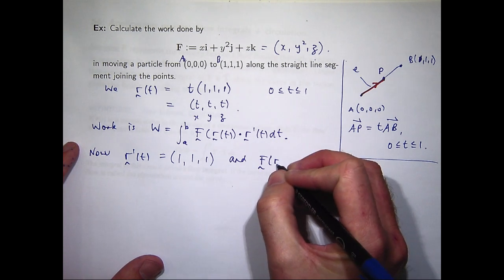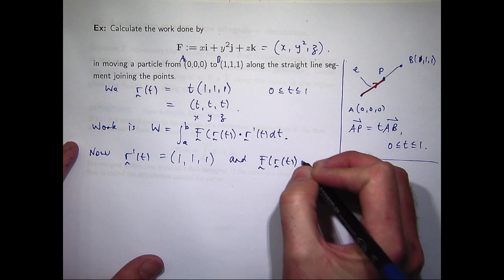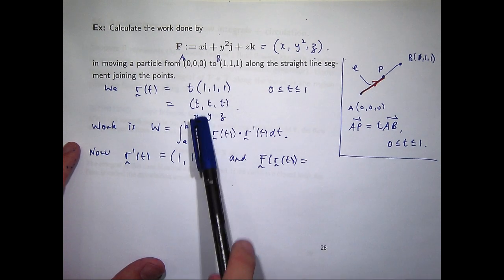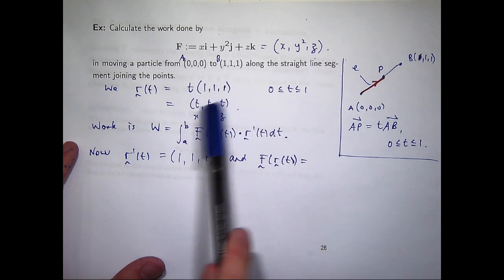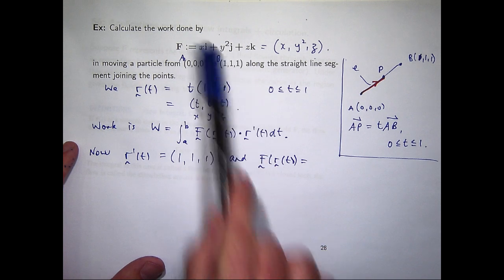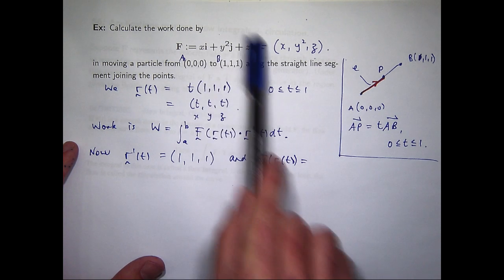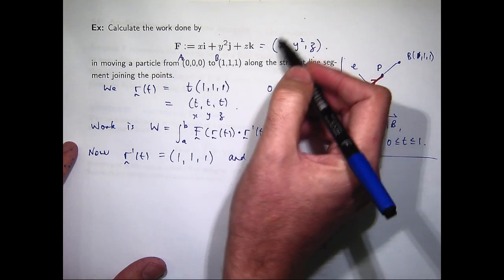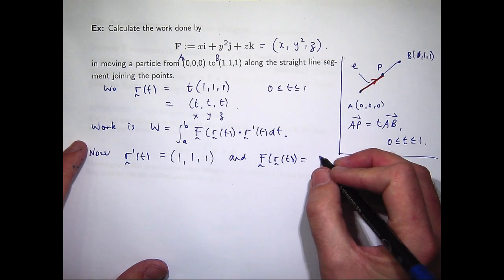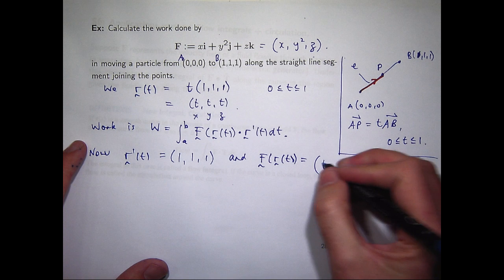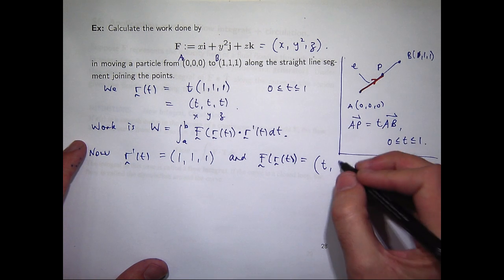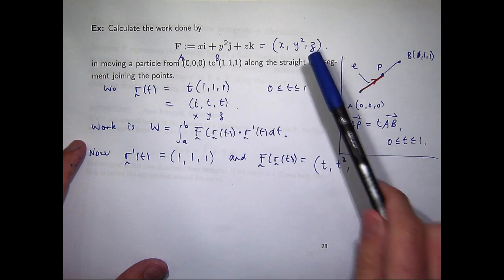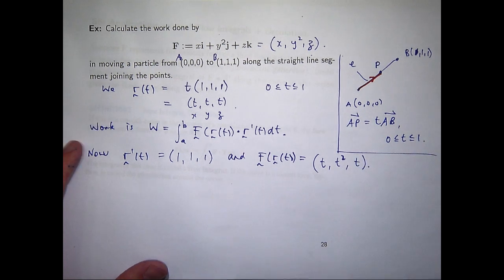So F evaluated along our parametrization. Essentially, we replace X in here with T, replace Y in here with T, and replace Z in here with T. So I'm just using this triple here. So T, T squared, and T. So pretty simple form.